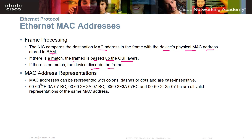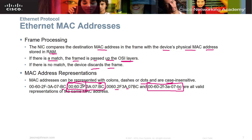MAC addresses can be represented with colons, dashes, or dots, and they are case insensitive. Most often you'll see it written with colons in all uppercase. Sometimes you'll see it written with dashes, and rarely with dots. The first three bytes are assigned to the vendor, and the last three bytes are assigned by the vendor as a unique identifier when they manufacture that device.